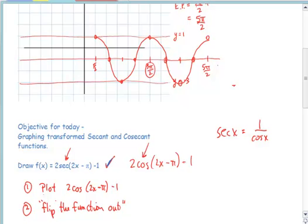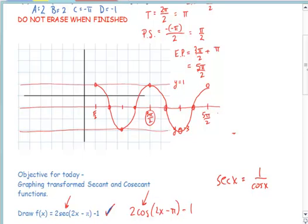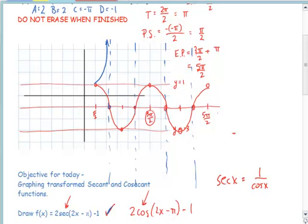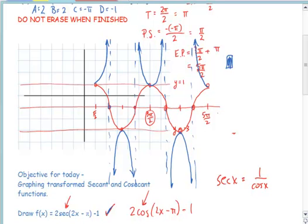Flipping the function out means — and I'll draw it in blue ink — wherever there was a point passing through the midline on the previous function, we have an asymptote. You basically take the function and flip it up if it looks like it's in that orientation, or flip it downward if it's at the lower part. And this is all you have to do to draw the secant function. So the function in blue is 2 secant of 2x minus pi, minus 1.